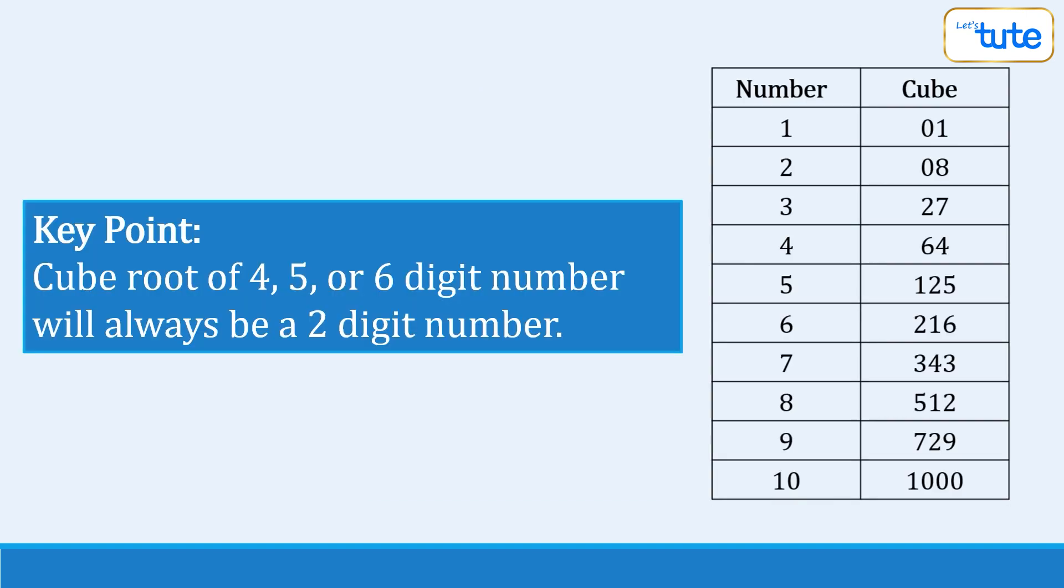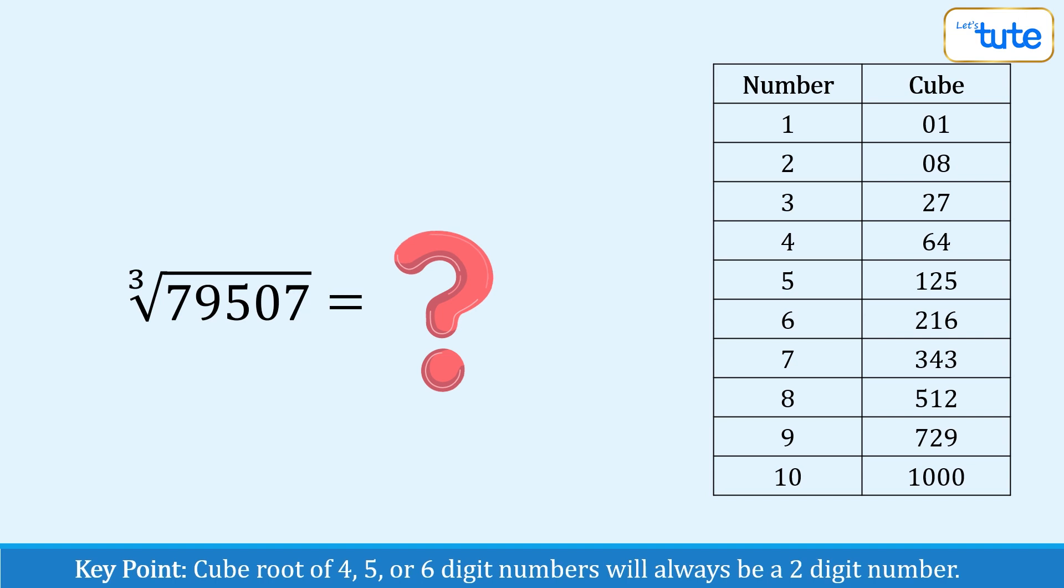The key point to remember is the cube root of a 4, 5 or 6 digit number will always be a 2 digit number. So let's start with the trick and find the cube root of the perfect cube number 79507. This is a 5 digit number, so its cube root will be of 2 digits.